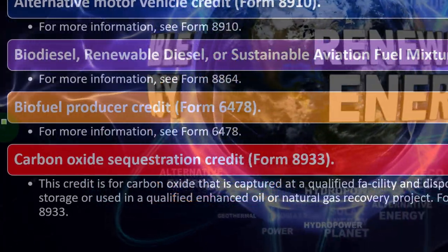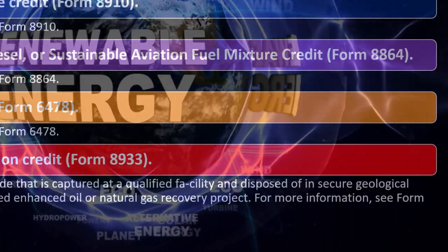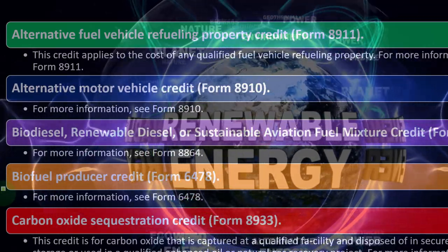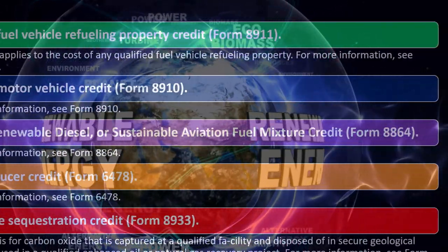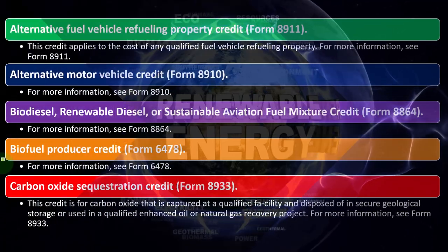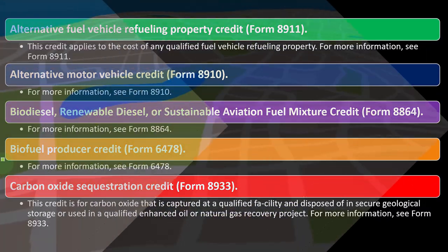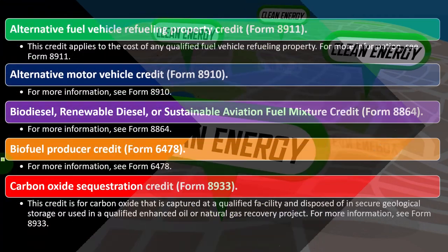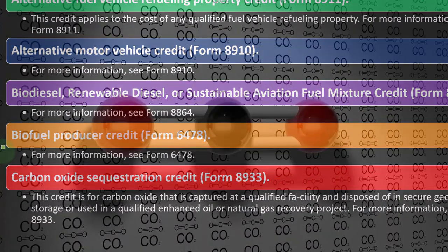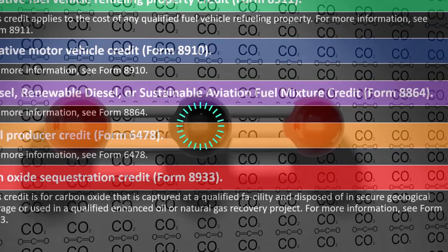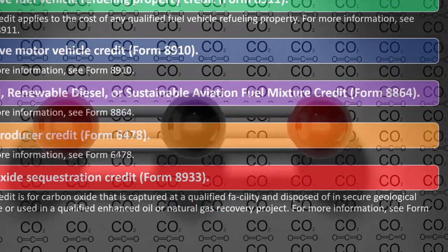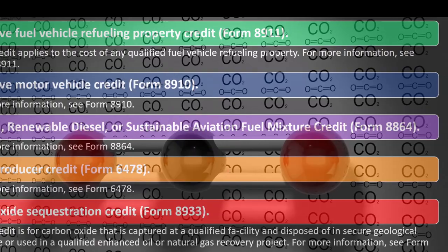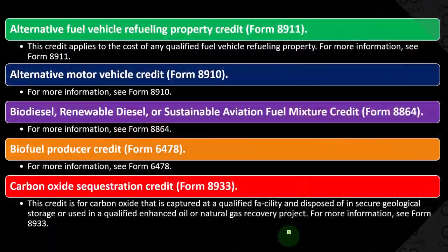Essentially, carbon sequestration deals with capturing carbon — one of the major greenhouse gases — and storing it so it's removed from the atmosphere. If you're dealing with that, you might be able to get some credit money for it. For more information, see Form 8933.